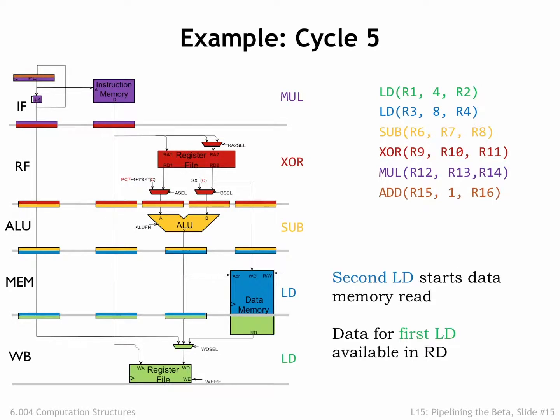In cycle 5, the results of the main memory read initiated in cycle 4 are available for writing to the register file in the WB stage. So execution of the green load instruction will be complete when the memory data is written to R2 at the end of cycle 5. Meanwhile, the MEM stage is initiating a memory read for the blue load instruction.